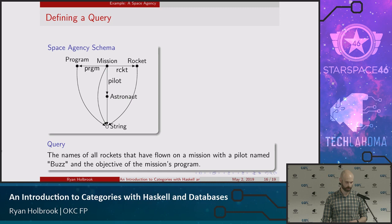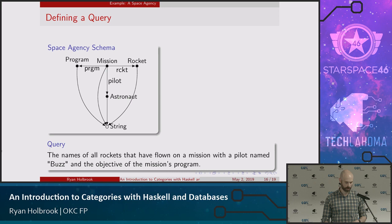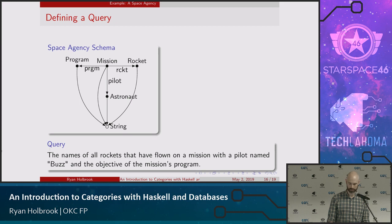Now let's say we want to query the database: the names of all the rockets that have flown on a mission with a pilot named Buzz, and the objective of the mission's program. Start with the names of all rockets that have flown on a mission — that's mission, rocket, name: start at the mission object, follow the arrow to rocket, then follow the name arrow down to its attribute. The second part — objective of the mission's program — is mission, program, objective: start at mission, follow the program arrow over, then follow the objective arrow down to its attribute.